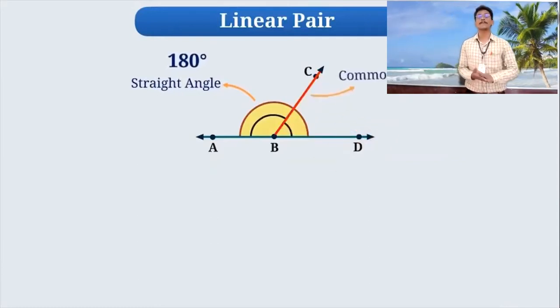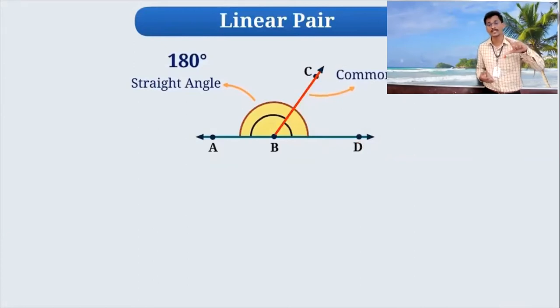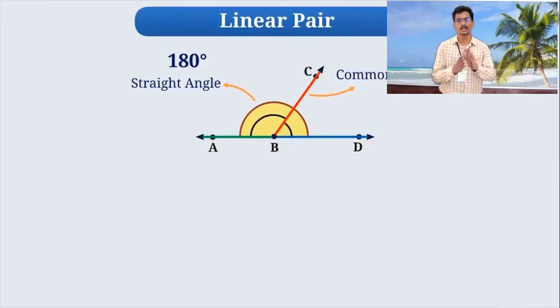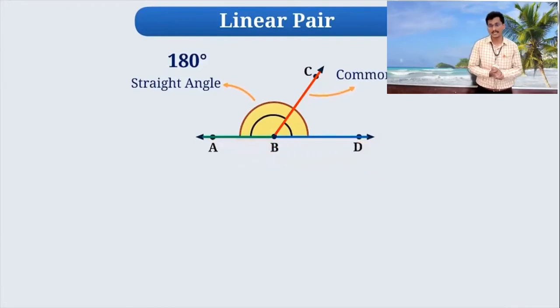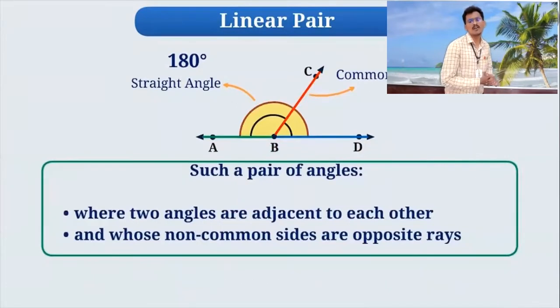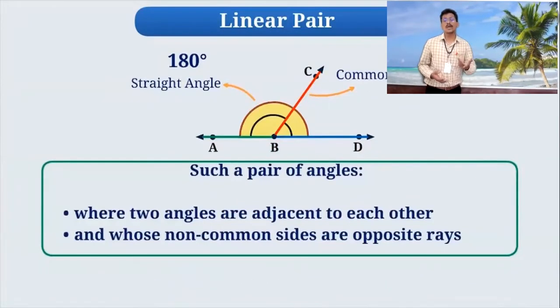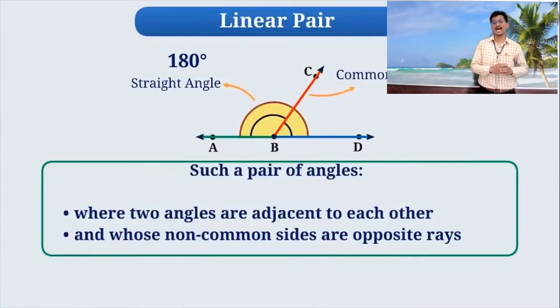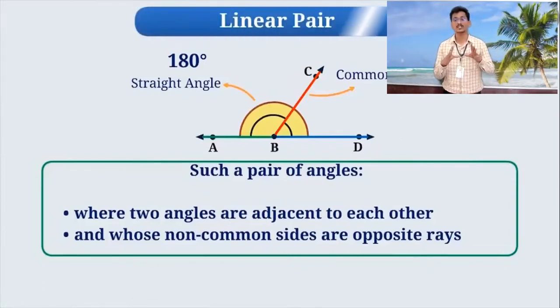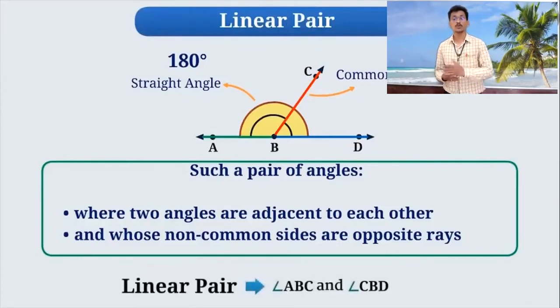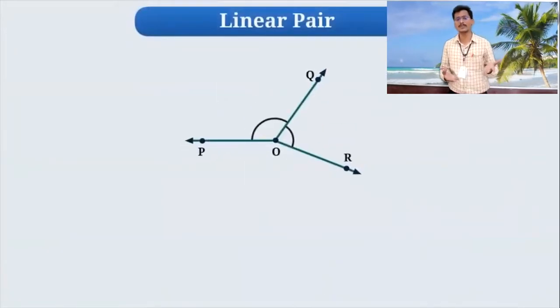Now, because of this BC common arm, we will get two parts of those angles, these two different angles. And those two different angles are Angle ABC and Angle DBC or CBD. Such a pair of angles where two angles are adjacent to each other and which non-common sides are opposite rays is called as linear pairs. Linear pair. So in this figure ABC and CBD are linear pairs.